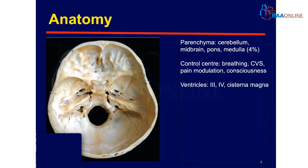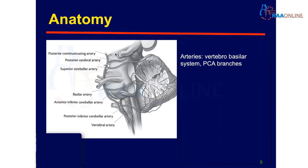Now what are its contents? The parenchyma mainly includes the cerebellum, midbrain, pons and medulla. The parenchyma contributes four percent of the total brain mass. It also includes the control center for breathing, cardiovascular system, pain modulation and consciousness, as well as the third and fourth ventricles and the cisterna magna. The arterial supply includes the vertebrobasilar system; the most important branches are the posterior cerebral artery, superior cerebellar, anterior inferior and posterior inferior cerebellar arteries.